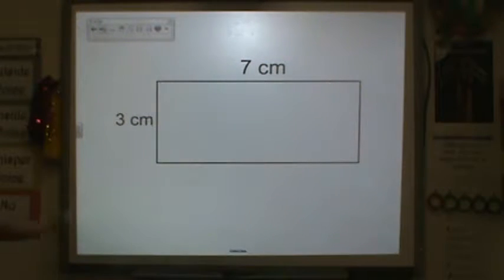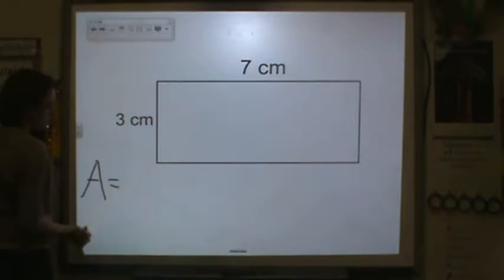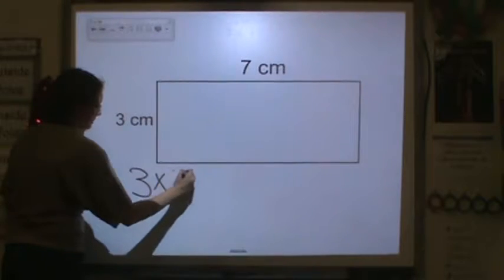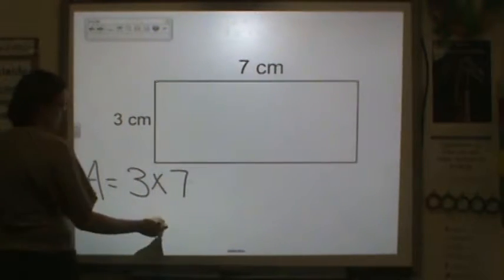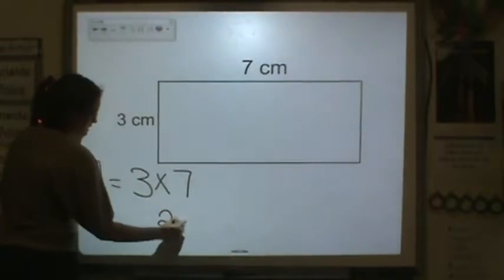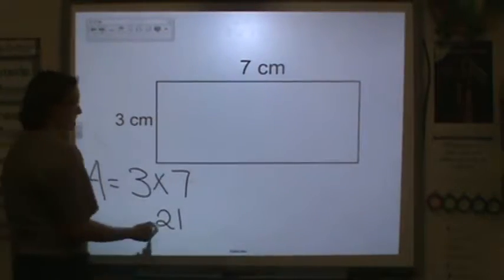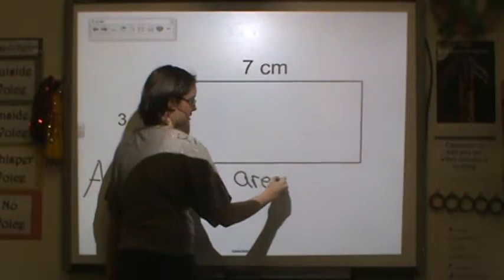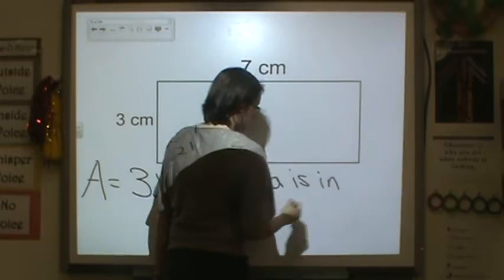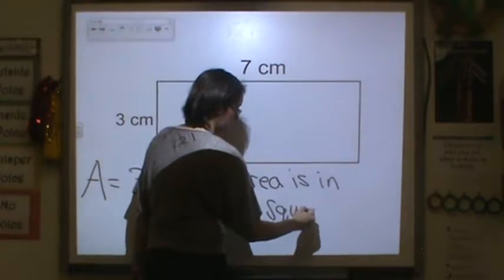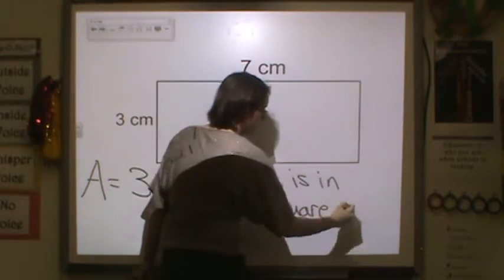So here, my area is equal to 3 times 7. So 3 times 7 is 21. Now remember, area is in square units.